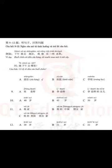12. 她叫大卫，她是美国学生，她今年二十二岁。大卫今年多大？(Her name is David; she is an American student; she is 22 years old this year. How old is David this year?)